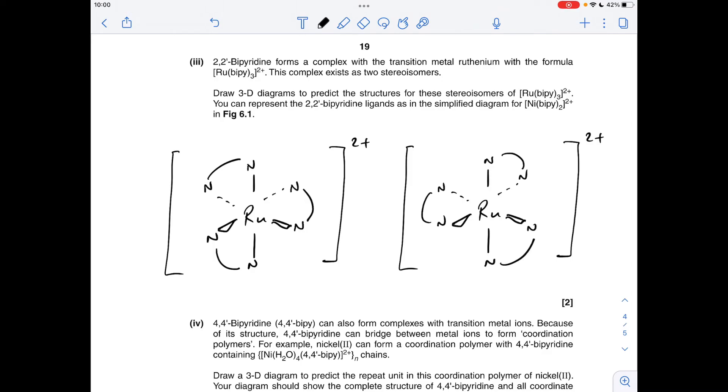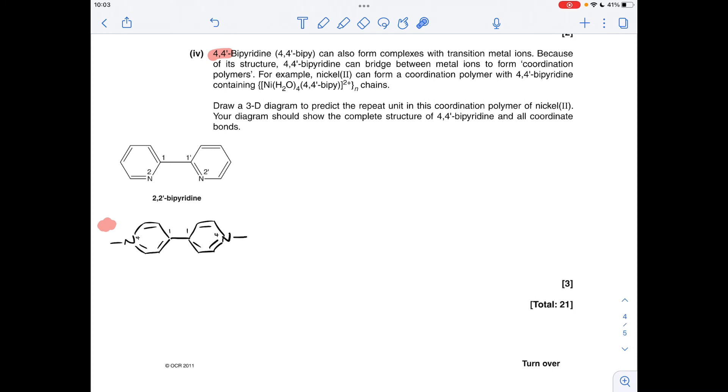For the final part of the question, we've got this extra information about this new version of a bipyridine ligand, the 4,4 version. I've just copied and pasted the 2,2 information from before so you can see the relative positions of the bridge and the nitrogen. In the 2,2 version, using that, the 4,4-bipyridine must look like this. You can see you've got one, two, three, four, so the nitrogen's there and there. Before I go into my final answer, I'm just going to try and explain what's happening using this very simplified version of the polymer.